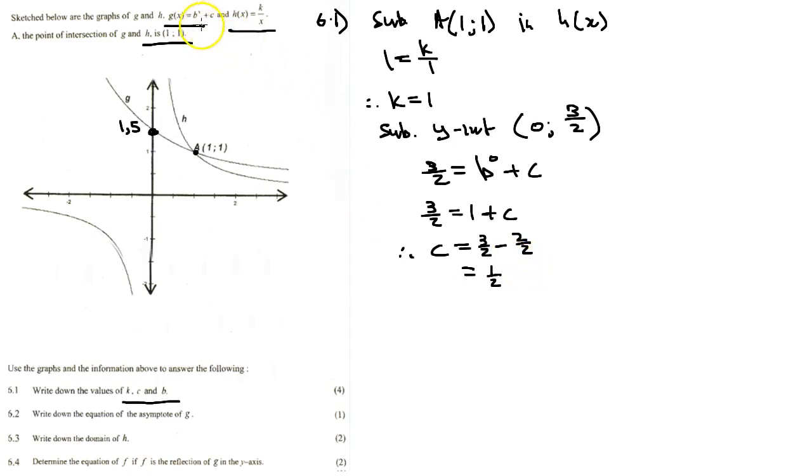Now let us solve for b. Since we know the value of c equals 1/2, let us substitute coordinate A (1,1). We're going to get 1 equals b to the 1 plus 1/2.